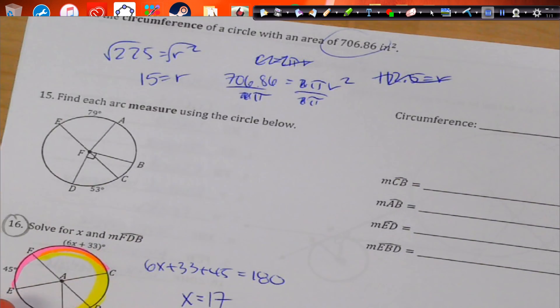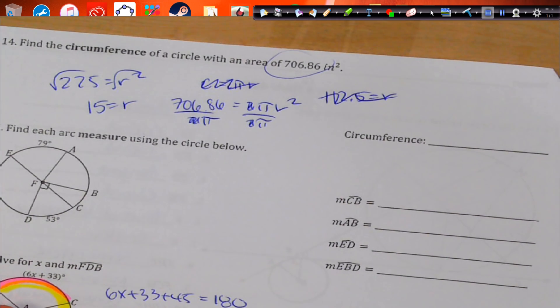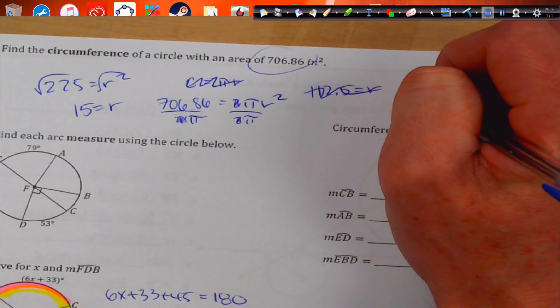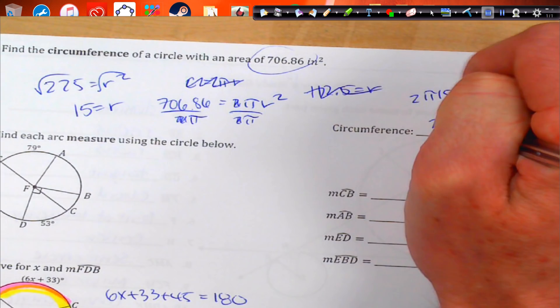Now that R is 15, we do 2 times π times 15, which is 30π for the circumference.